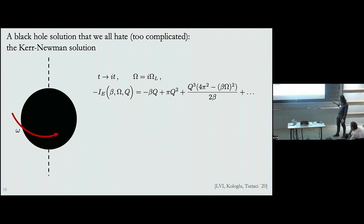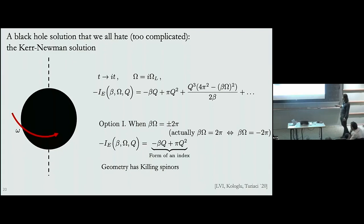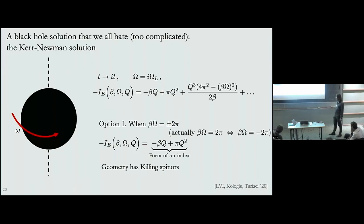In the large-beta expansion, one immediately observes that if I plug β·Ω equal to plus or minus 2π, two factors cancel, and in fact this persists to all orders in perturbation theory in beta. The answer you get from setting β·Ω to take this form is precisely the form of the index: it's −β times E_BPS times the entropy. Importantly, this geometry has Killing spinors, so even though we're discussing a black hole at finite temperature, these black holes are actually supersymmetric — they're Euclidean solutions.